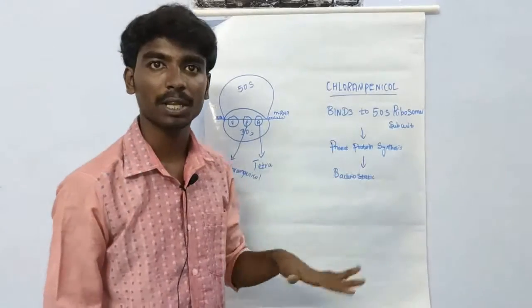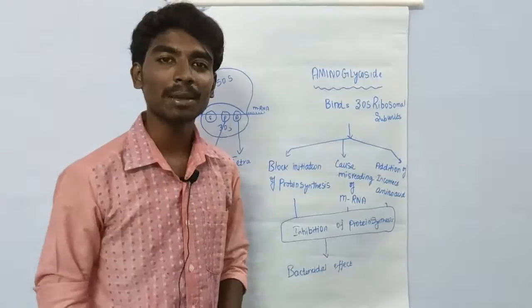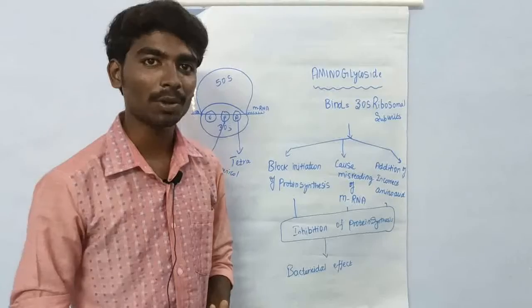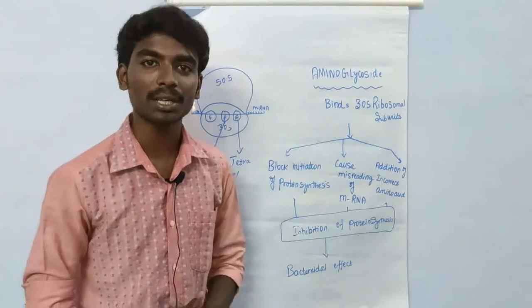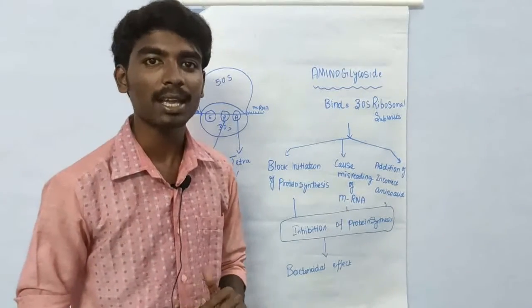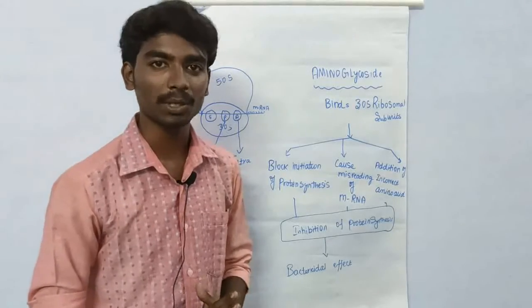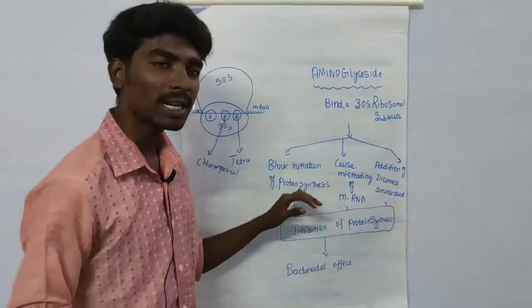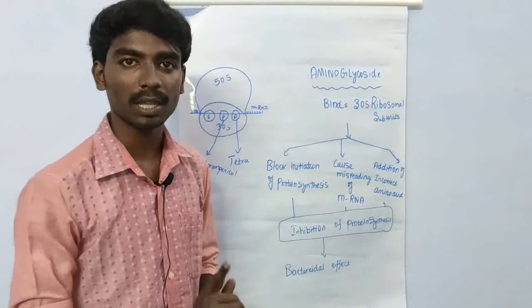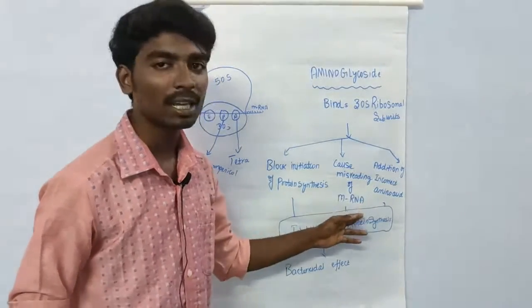This is chloramphenicol mechanism. Now let's talk about aminoglycosides. Aminoglycosides bind to 30S ribosome. The initial, the first, the misreading of mRNA.